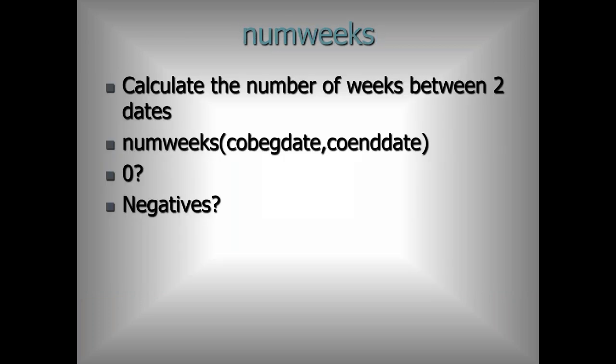NumWeeks is a new function being added. You pass it two dates and it calculates how many weeks are between those two dates. If the begin date and the end date are in the same week, that is one week. You can't get a negative result between two dates. I believe this went in with version 93, which would have been the November build.